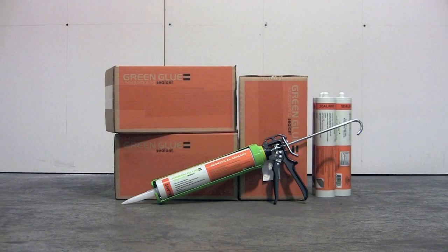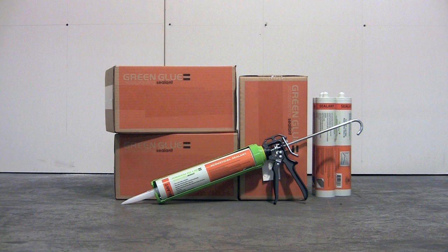Available in cases of 12 28-ounce tubes, the Green Glue Noise Proofing Sealant is a high-performance alternative to standard latex or silicone caulk. The damping properties of the sealant provide greater acoustical performance than standard mudding and taping.